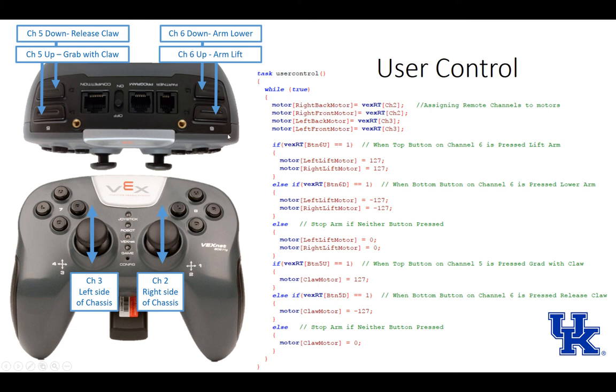Then I'm going to program these buttons to lift my arm. This is an if statement, and I'm asking a question. If my VEX remote button six up equals one, so it equals pressed, I want you to set the motor left lift motor equals 127 and right lift motor equals 127. So as long as I'm pushing that, it's lifting.